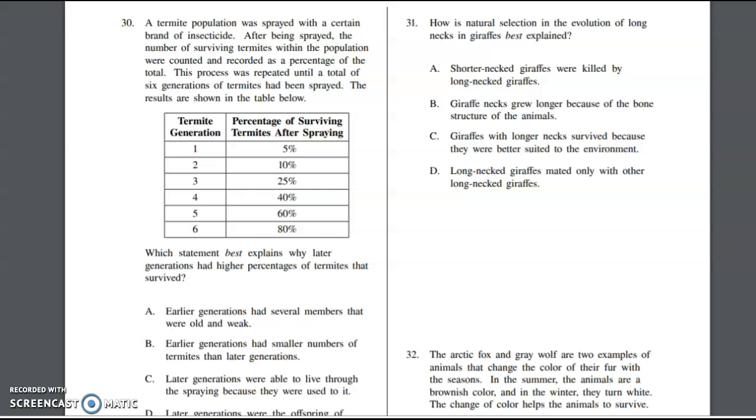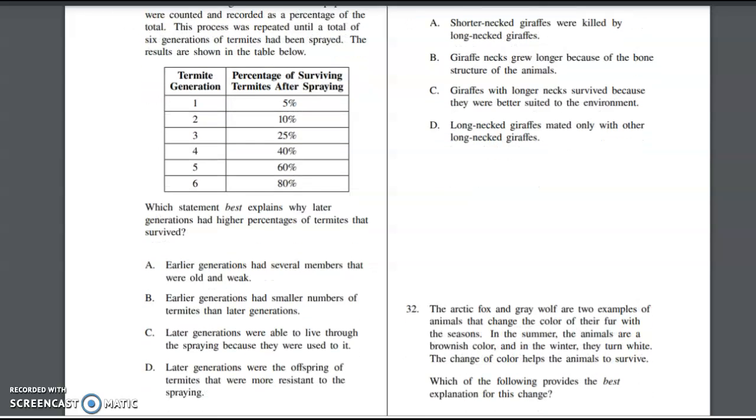Number 30 says a termite population was sprayed with a certain brand of insecticide. After being sprayed, the number of surviving termites within the populations were counted and recorded as a percentage of the total. This process was repeated until a total of six generations had been sprayed. The first time they sprayed, only 5% survived, so 95% were killed. Generation two, 10% survived, 25% until we got all the way up to generation six and 80% survived. So only 20% were susceptible to the spray at that point.